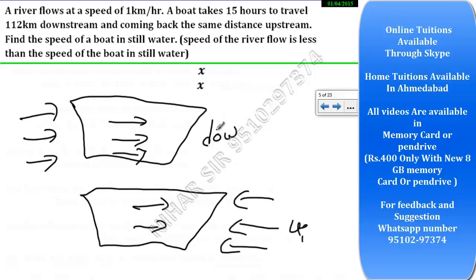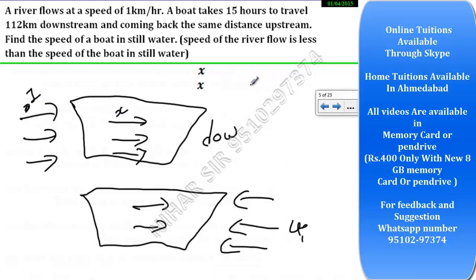In the downstream case, your boat's speed will increase because the boat is moving at its own speed and the flow of water will give it a push. So it will increase the speed. Suppose the water speed is 1 and the boat speed is x. In this case, downstream speed will be x plus 1, because the river flow adds more speed.